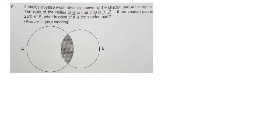Two circles overlap each other as shown by the shaded part in the figure. The ratio of the radius of A to that of B is 3 is to 2.